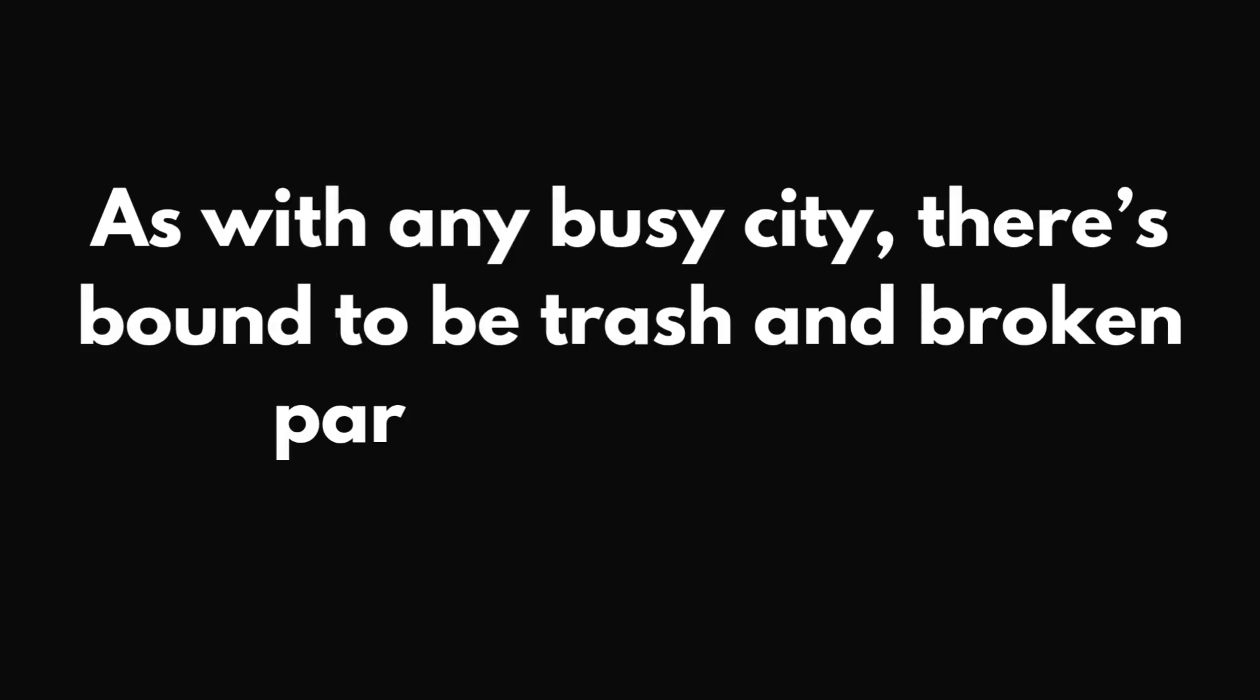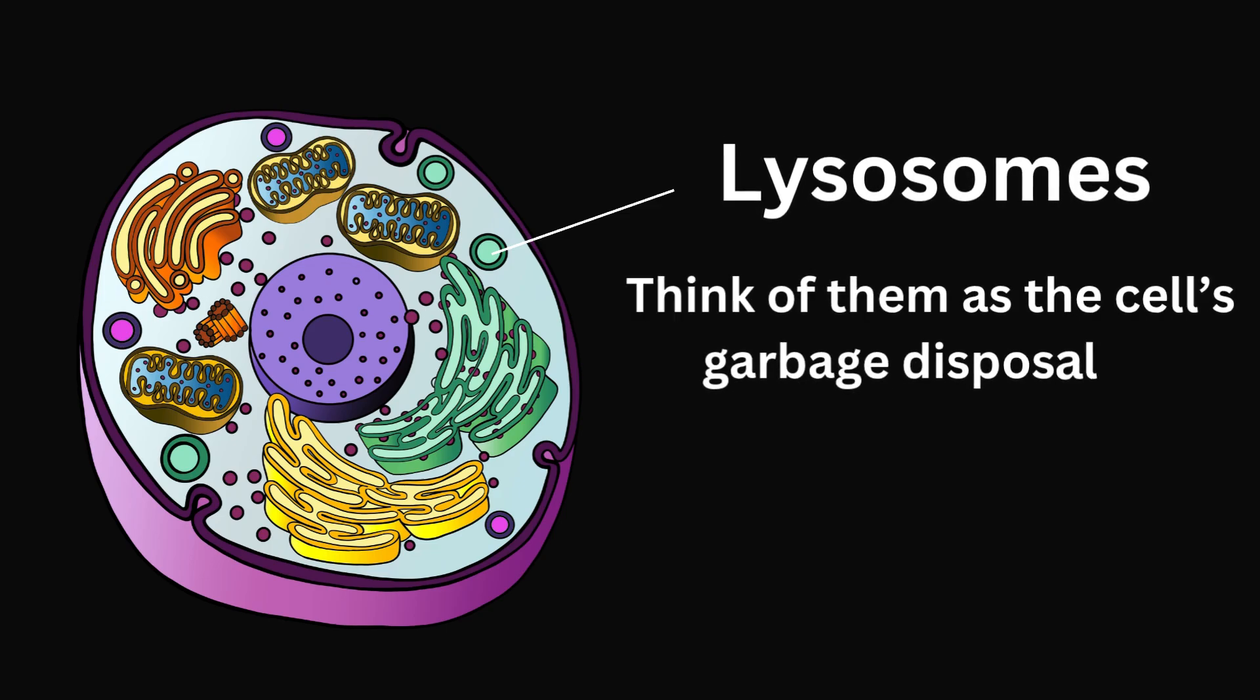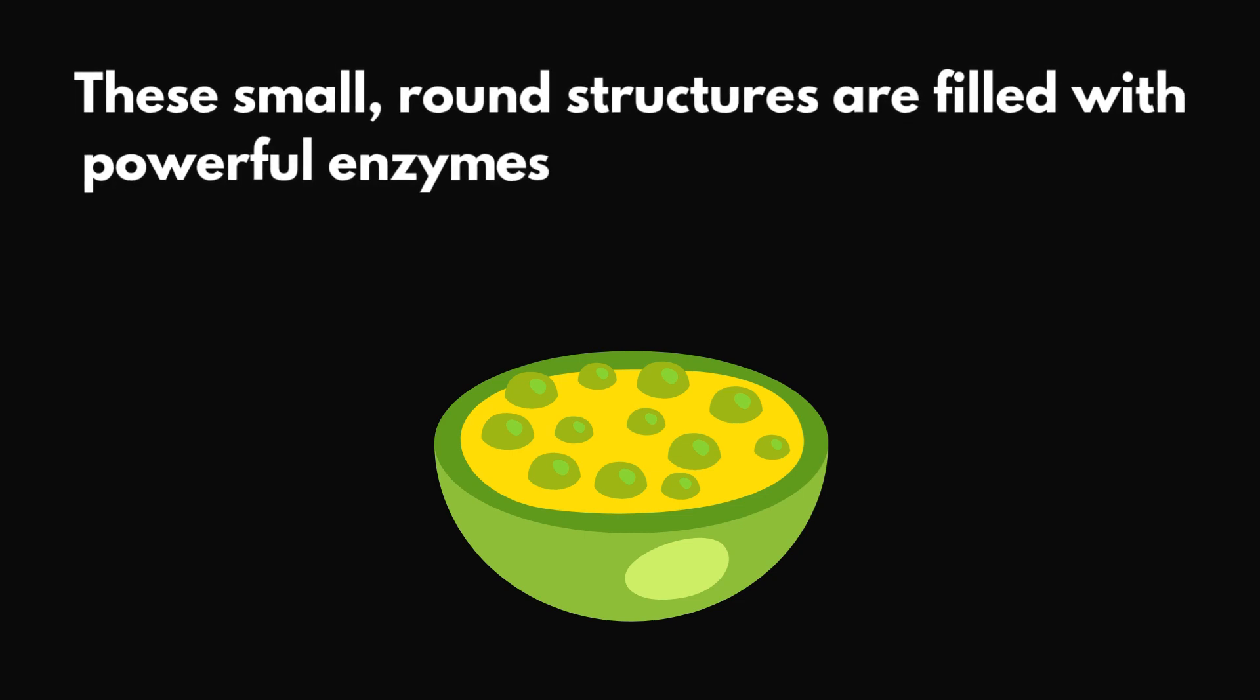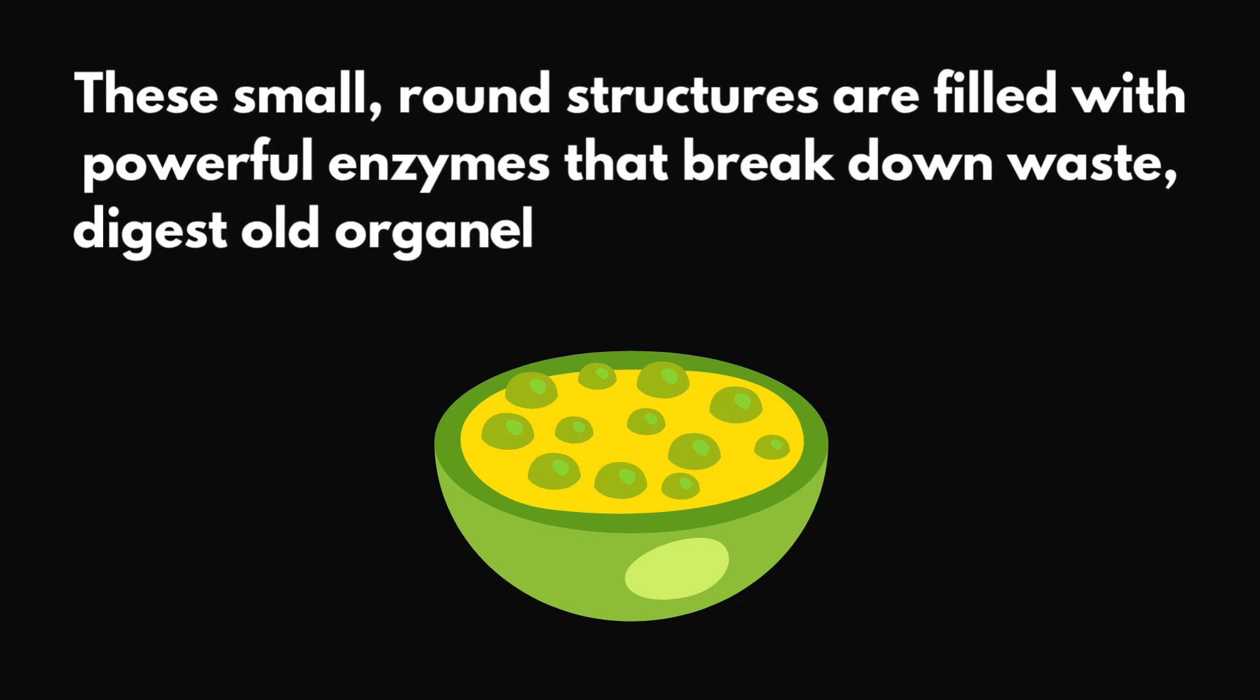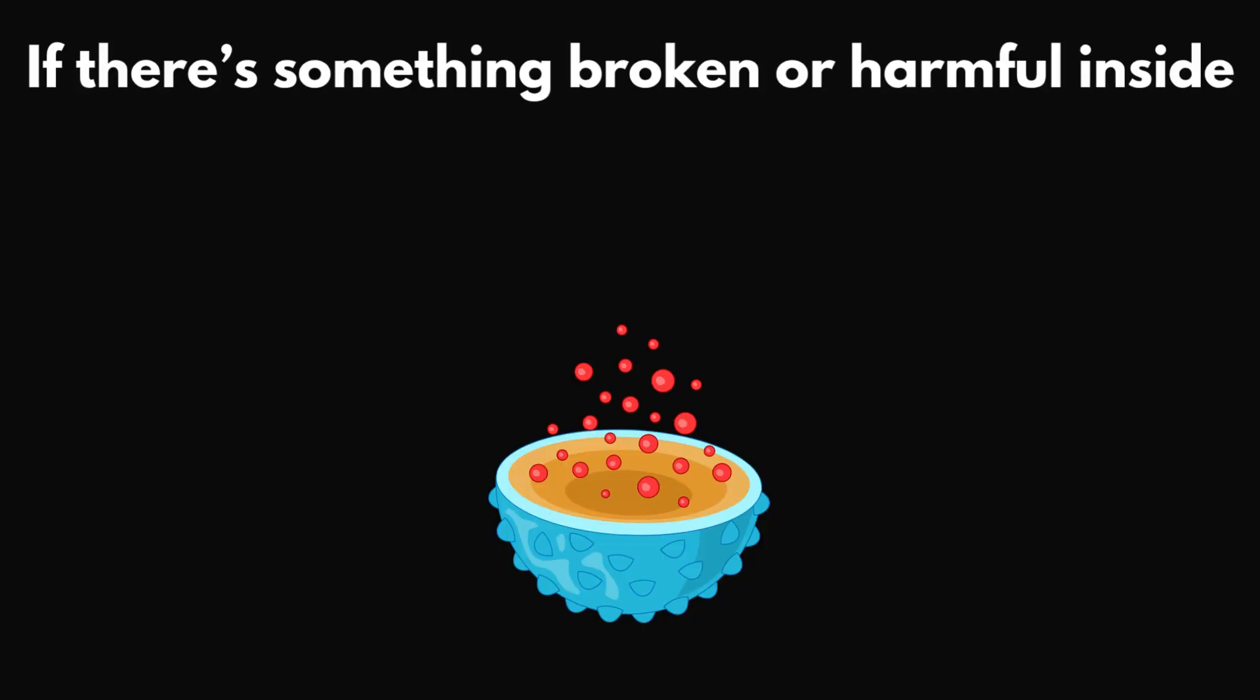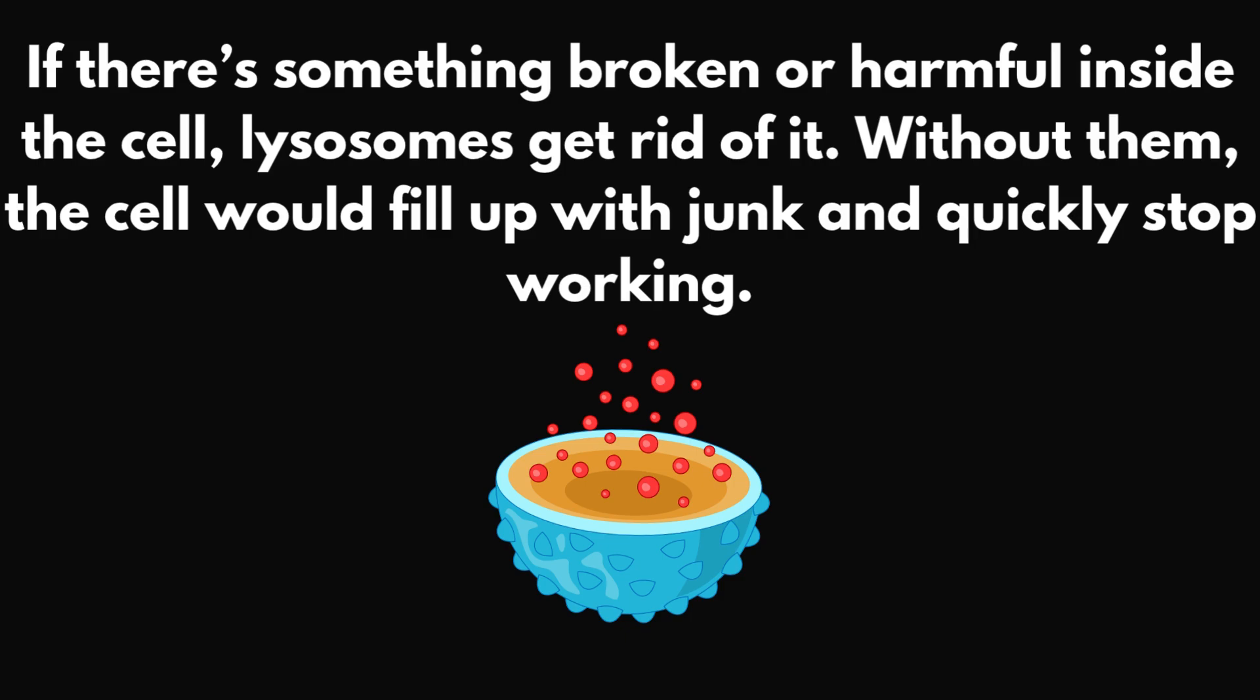As with any busy city, there's bound to be trash and broken parts lying around. That's where the lysosomes come in. Think of them as the cell's garbage disposal or recycling centre. These small, round structures are filled with powerful enzymes that break down waste, digest old organelles, and clean up the cell's messes. If there's something broken or harmful inside the cell, lysosomes get rid of it. Without them, the cell would fill up with junk and quickly stop working.